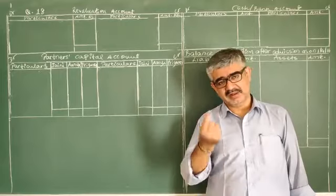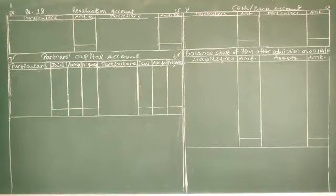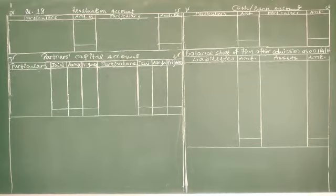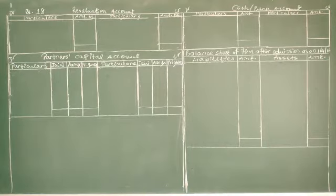Let's continue with Question 18. First, as I say, go through the question carefully, concentrate on your textbook. Question 18.1a: Jaini and Anya are partners sharing profit and loss in the ratio of 3:2. The balance sheet of the firm as on 31st March 2016 shows: Capital, General Reserve, Investment Reserve, Profit Sharing Fund, and creditors on the liabilities side.